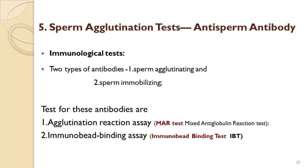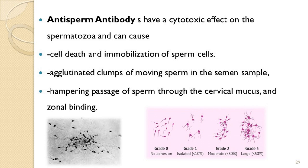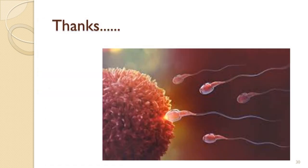Two tests are used for antisperm antibodies: the agglutination reaction assay and the immunobead binding assay. These help diagnose cases of antisperm antibodies, which may be agglutinating or totally immobilizing the spermatozoa. The presence of antibodies against spermatozoa has adverse effects on sperm motility and sperm survival. They may lead to necrospermia (death of spermatozoa) or asthenospermia (weak motility), clumping of spermatozoa, and hindrance of sperm mobility in the female genital tract, preventing ascent through the cervical area.